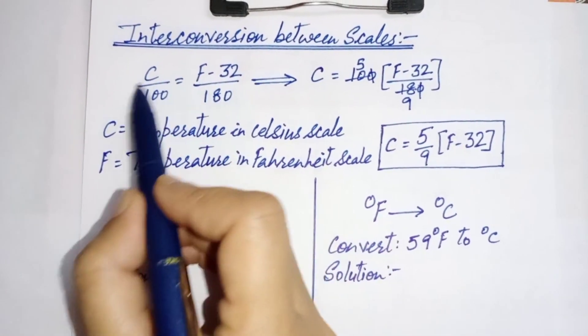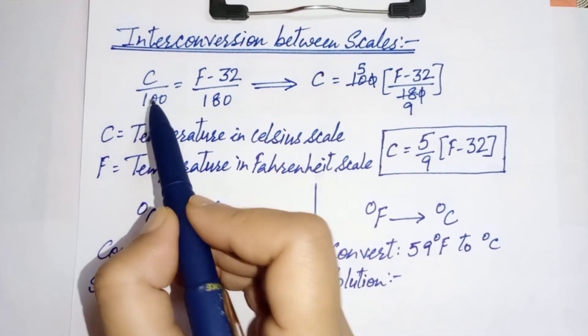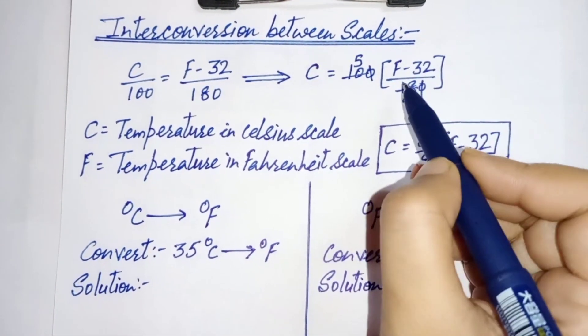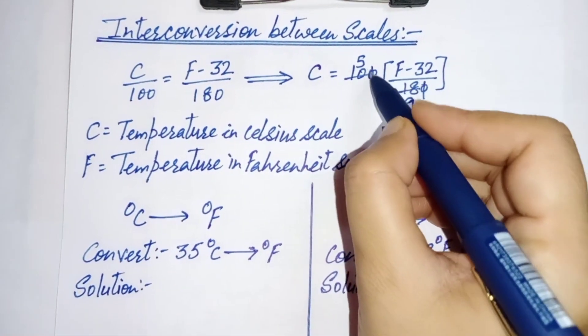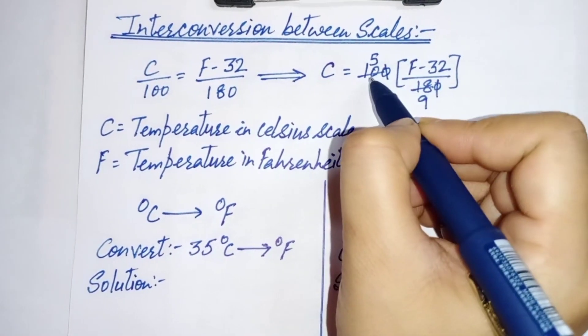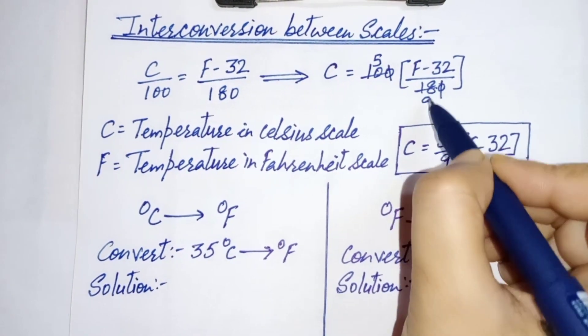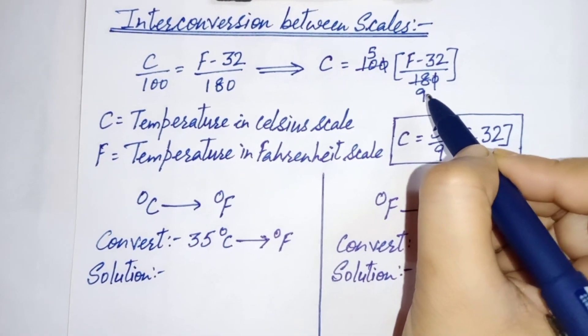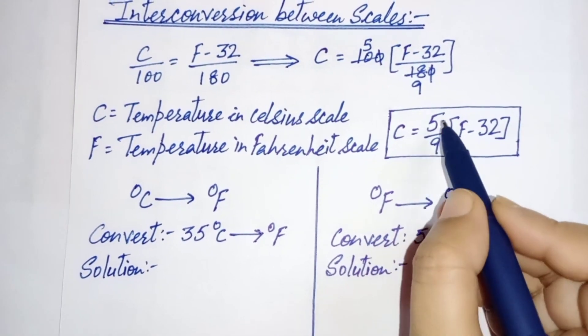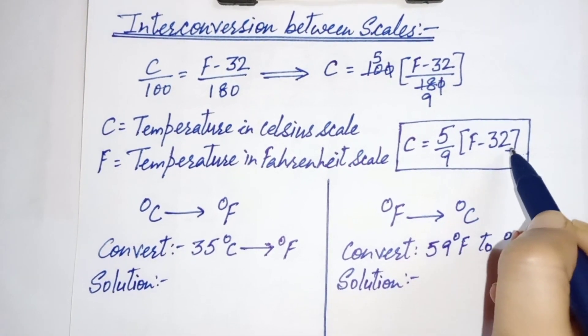You can simplify it by taking 100 towards the right side. First cancel out zero to zero. Now two fives are 10 and two nines are 18. We will get C is equal to 5 over 9 F minus 32.